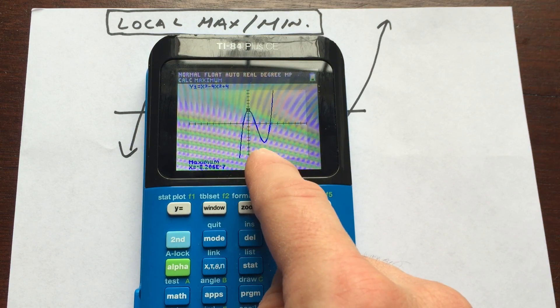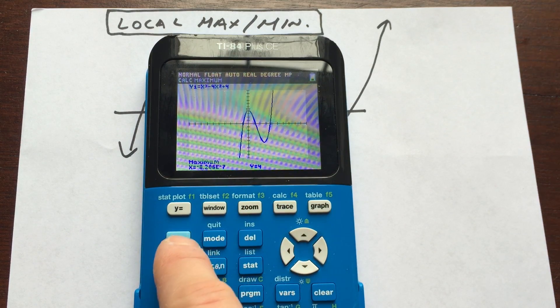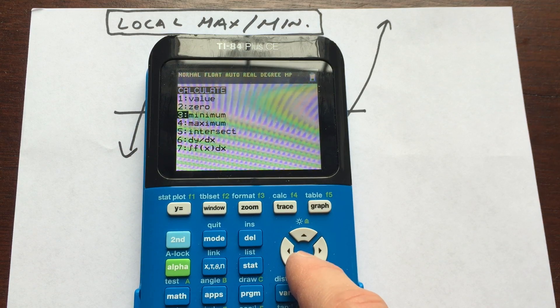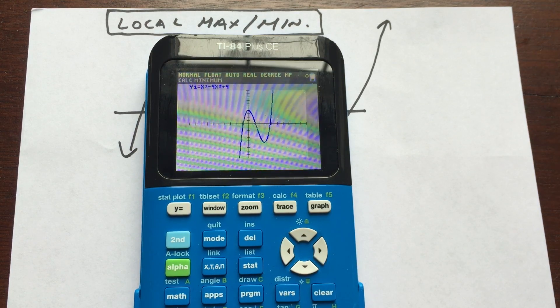Let's find the local minimum here now. We're going to do the same process. We're going to go to second, calculate. And we want the minimum this time, number three. So I'm going to hit enter in the lower right-hand corner of your calculator.